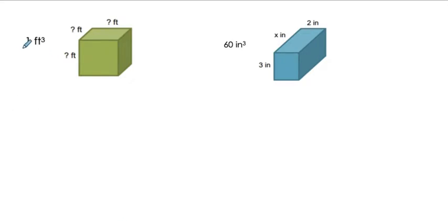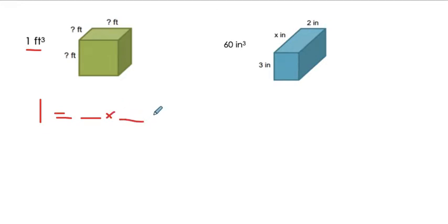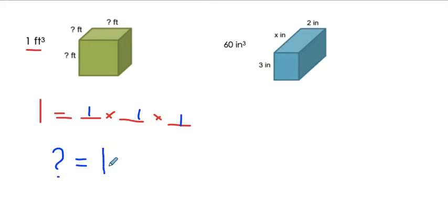Our volume is given right here — one cubic foot. So the inside of this entire rectangular prism or cube is going to be one foot cubed. I already know my volume is one, but I don't know what the length is, the width is, or the height is. I have to figure out what three numbers I multiply together to get one. That's not too difficult — one times one times one is one. So each question mark is going to be one foot.